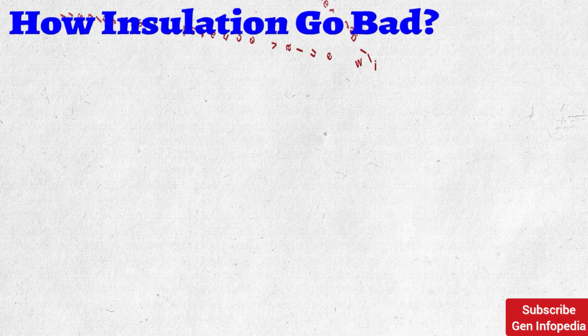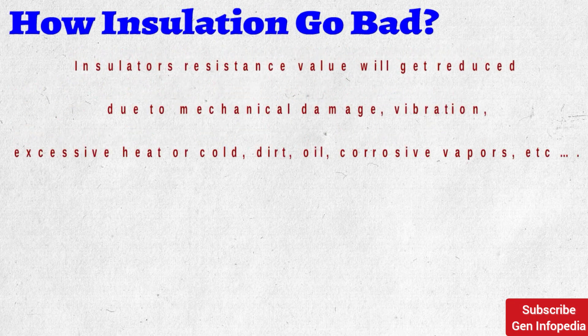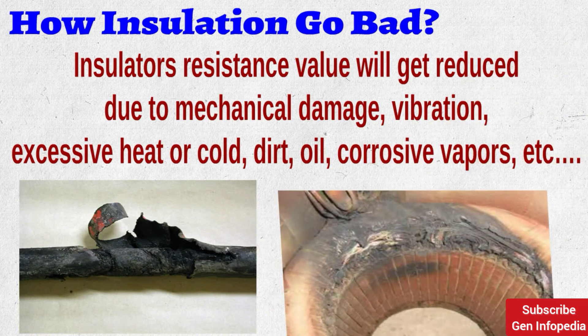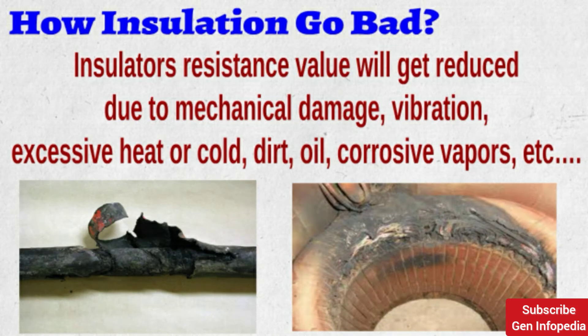How does insulation go bad? When your electrical system and equipment are new, the electrical insulation should have high resistance. But over time, this insulator resistance value gets reduced due to many reasons — mechanical damage, vibrations, excessive heat, dirt, or corrosive vapors. In those conditions, small pinholes or cracks develop in the insulation, and moisture and dust penetrate the surface, providing a low-resistance path for leakage current. Insulator resistance usually drops gradually, giving warnings, so we need to check insulation resistance periodically to prevent equipment damage.